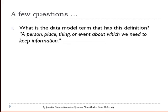So what is the data model term that has this definition: a person, place, thing, or event about which we want to keep information? What are we referring to when we say we have a person, place, thing, or event about which we need to keep information?